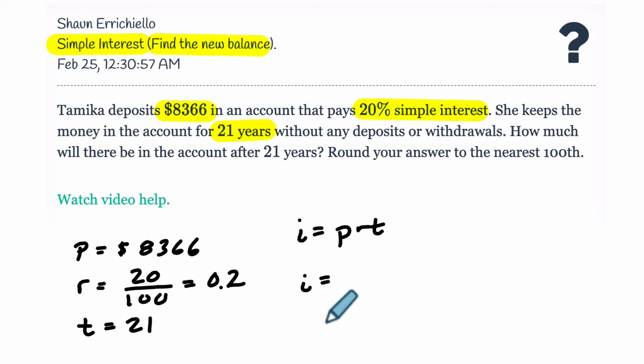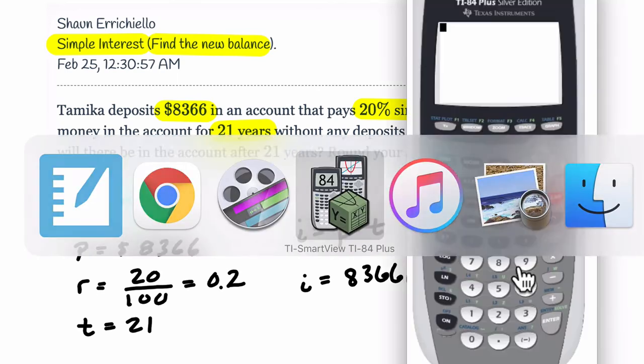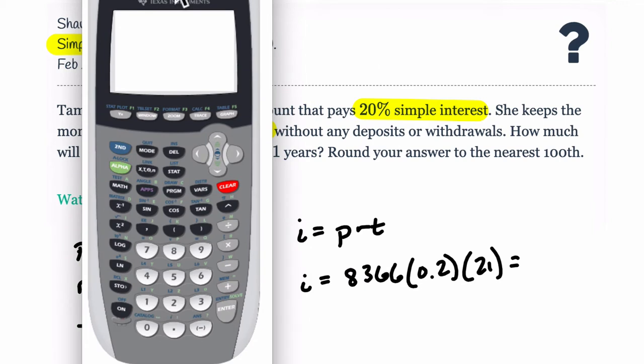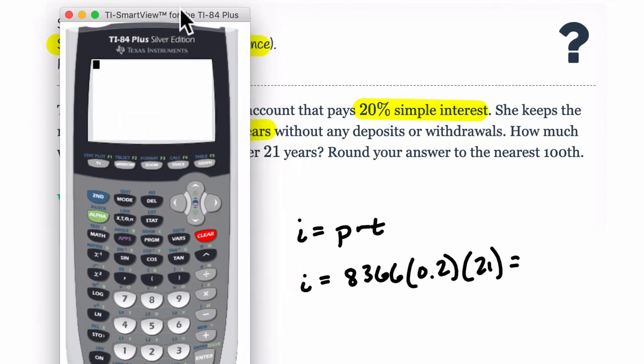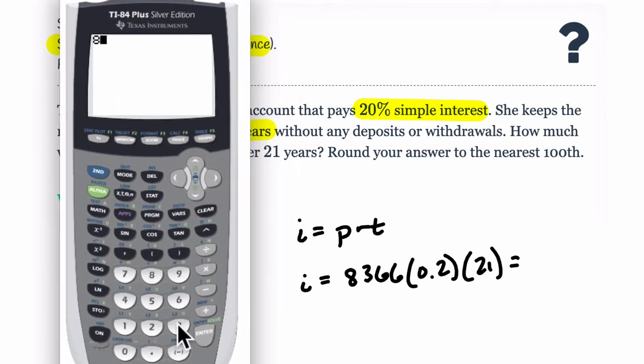So, we're going to do 8366 times 0.2 times 21. This will get us our interest. Let's see what number that is. 8366 times 0.2 times 21. $35,137.20.